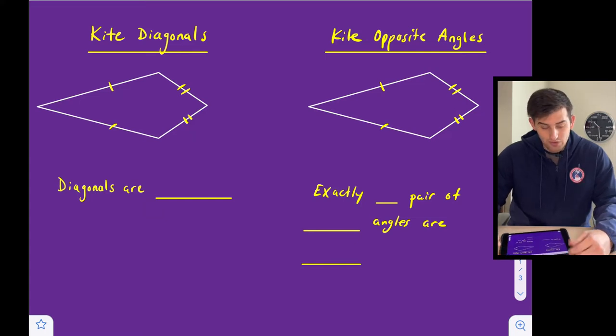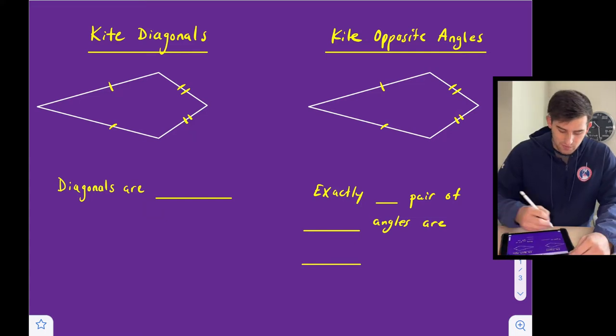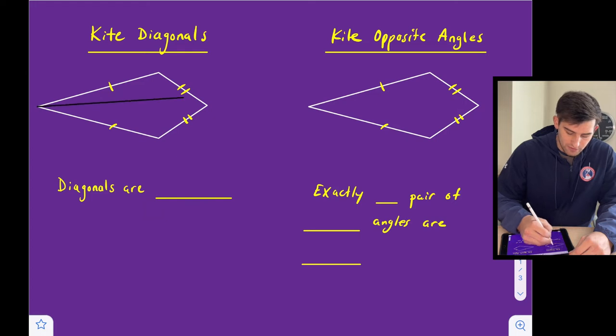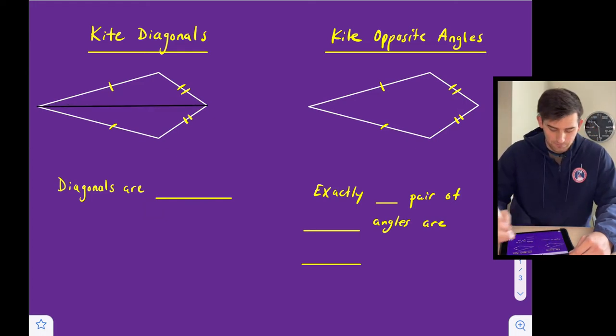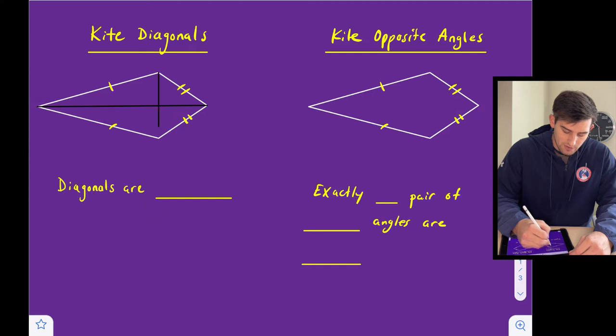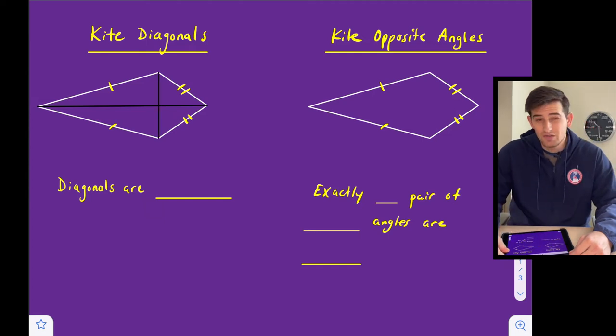So the kite's diagonals. Let's draw the diagonals in there. A diagonal goes from one vertice to the opposite vertice. So there would be one diagonal and the next one would be right here.